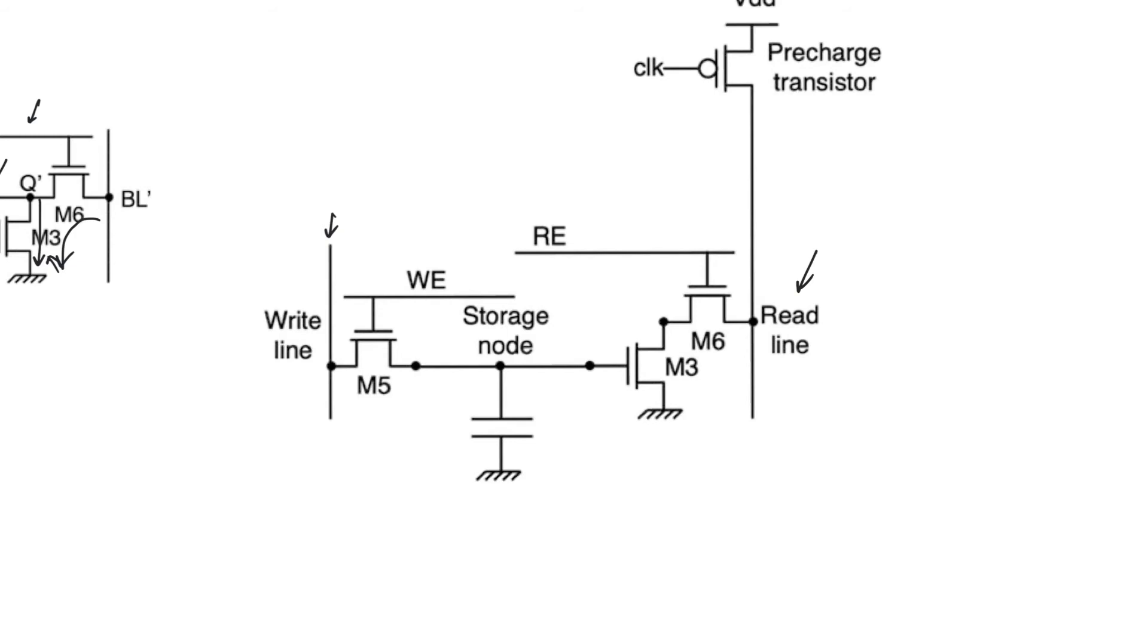So let's think about how we can write into this cell first, and let's think about conceptually where storage takes place. So if you want to write a 1, or a VDD, you're going to drive the write line to a value of VDD, and then you're going to enable the word-enable line. So you're going to raise word-enable to 1, which turns on M5. Now this causes the capacitance at the storage node to charge up to VDD, and then we lower word-enable.